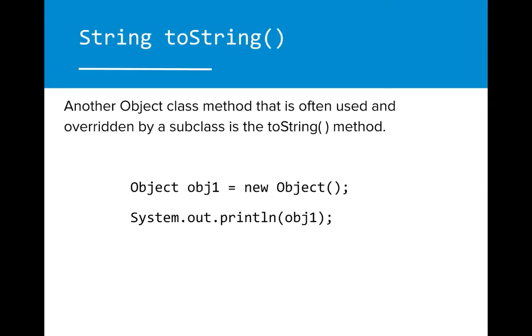The toString method is another commonly used and commonly overridden method from the object class. Remember, when an object name is called with no method, the toString is returned as a string representation of the object.